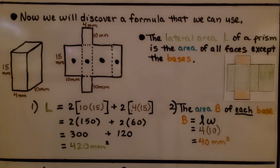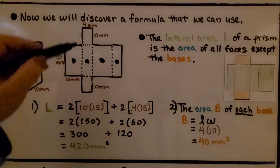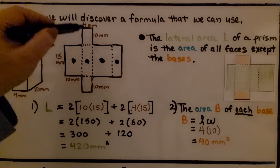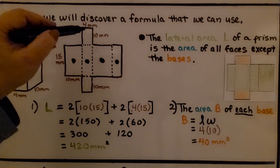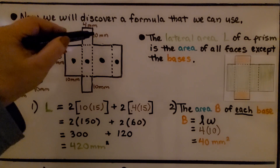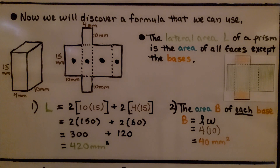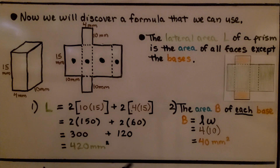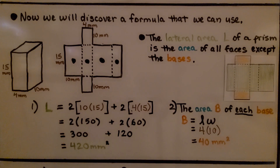The area B of each base would be the length times the width of a base. So we have four times ten, which is 40 millimeters squared.